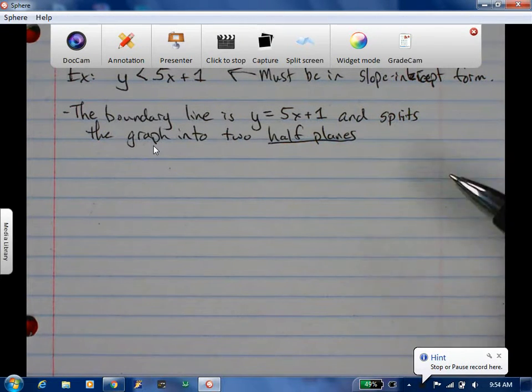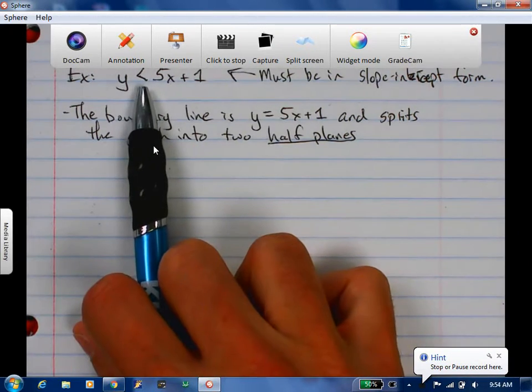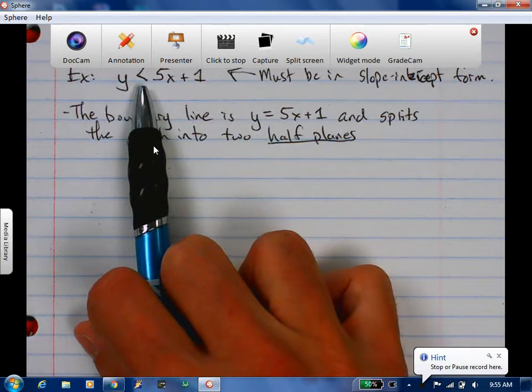When we draw this line, will we draw a dashed line or a solid line? What do we have to look at for that? So it's a less than, can it equal? Is there an equal to? No. So since it has to be less than, it's going to be dashed.